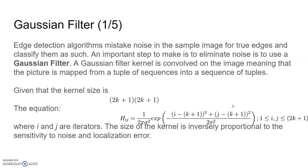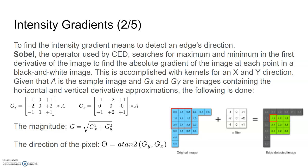Step two is intensity gradients. To find the intensity gradient means to detect an edge direction. These directions can include horizontal, vertical, and diagonal.